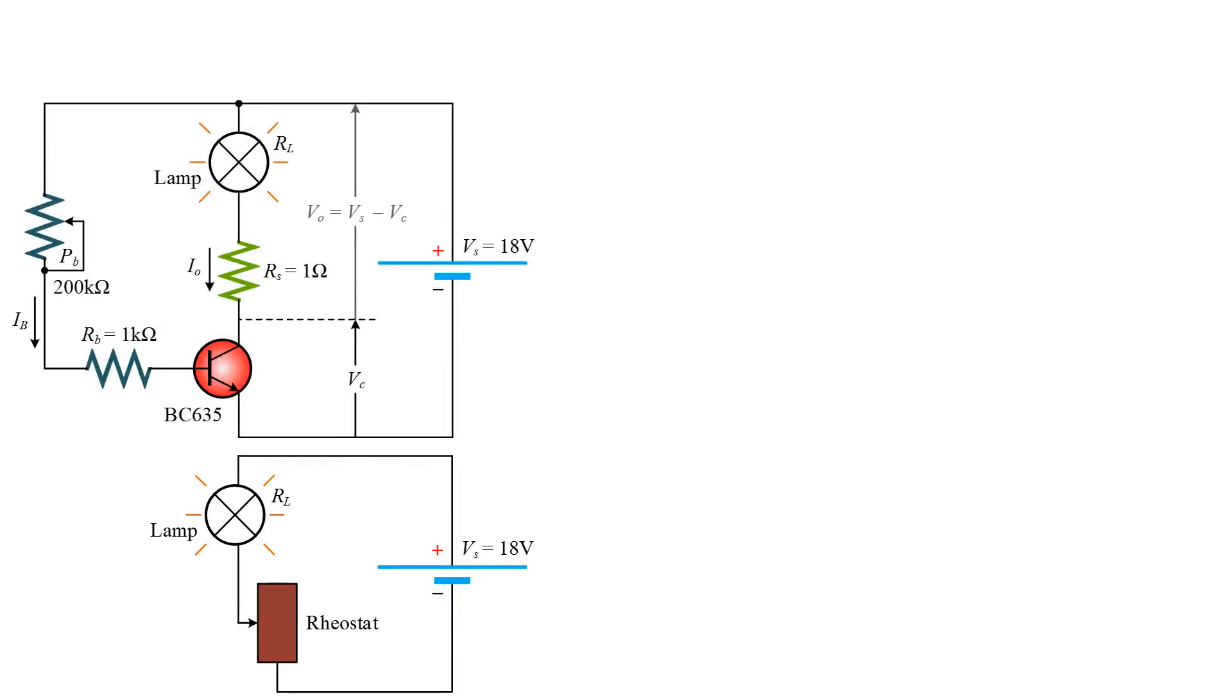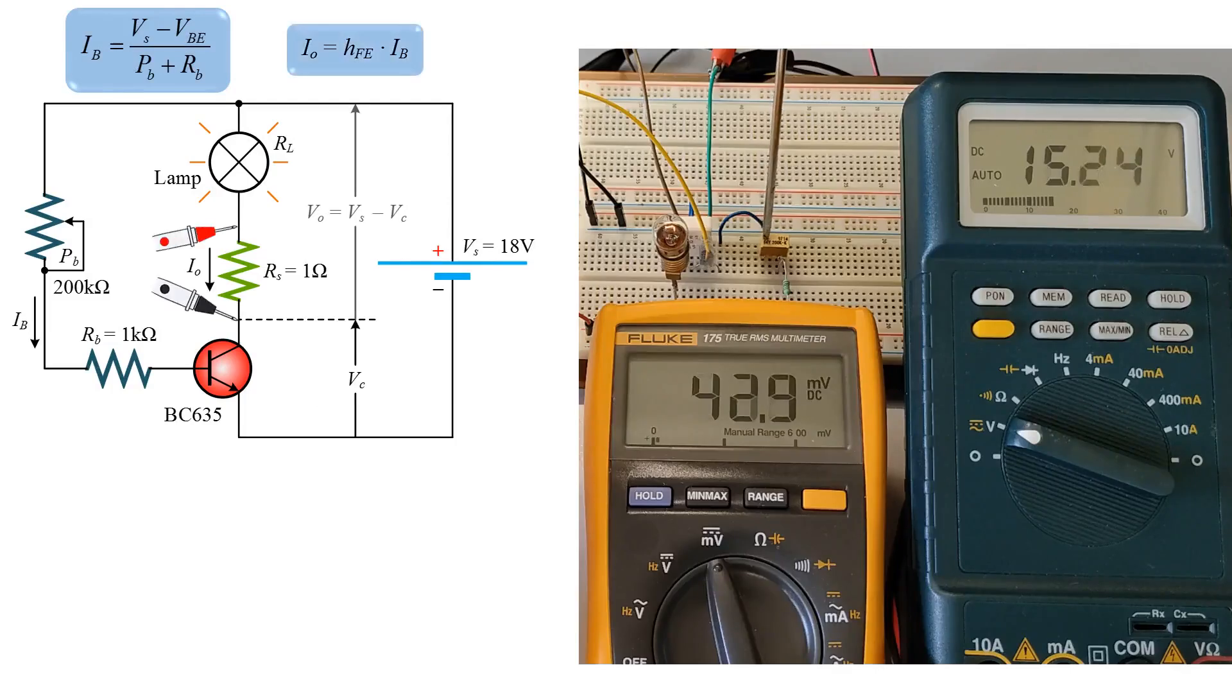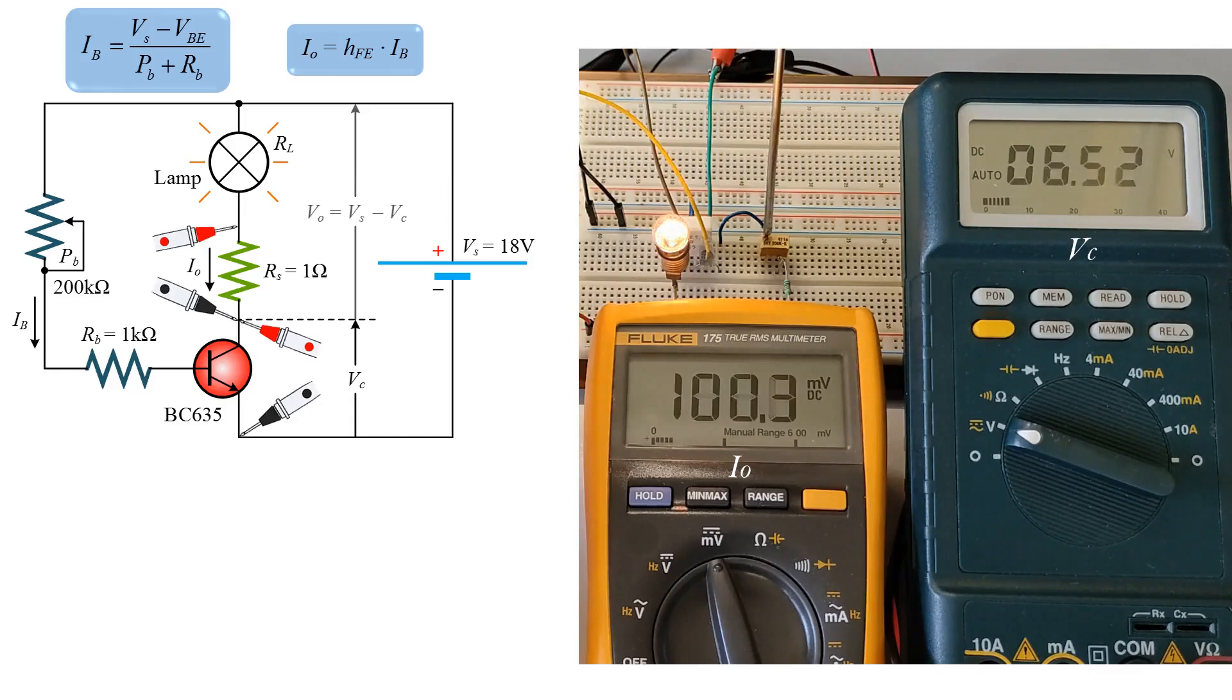The use of a transistor in place of the rheostat is more convenient in practice. By changing the base current of the transistor with the trimmer, the collector current flowing through the lamp is adjusted. Therefore, the transistor acts as a variable resistor, controlling the power and brightness of the lamp.